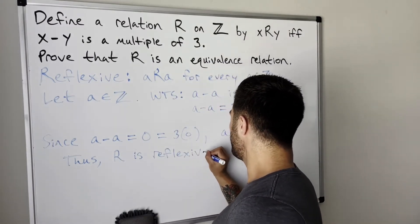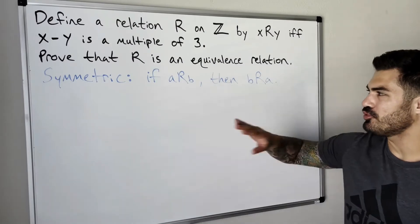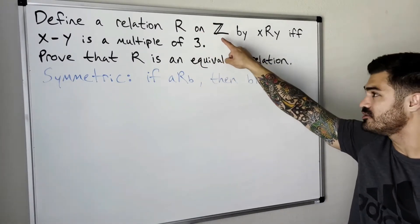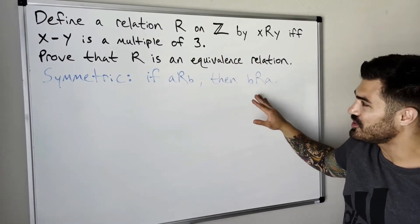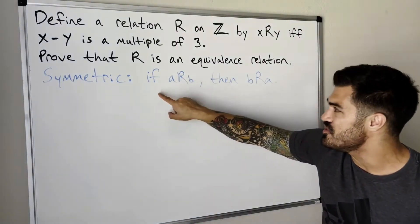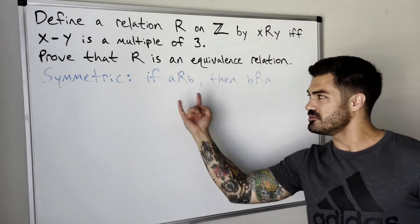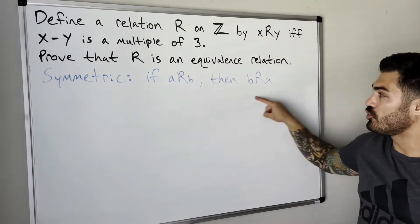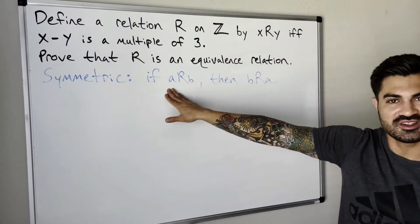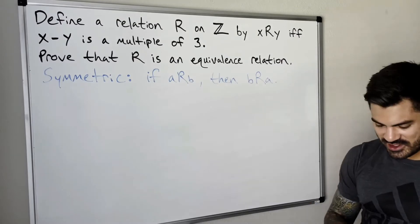Pretty quick and easy. Let's see if the same is true for symmetric. Symmetric is a little different. Instead of proving something is true for every element in the set, we're proving a conditional statement — we're only concerned with cases where a is related to b. Symmetric means: if a is related to b, then b is related to a. We always assume the if part is true and then try to show the then part is true.